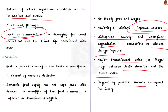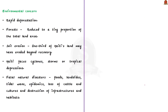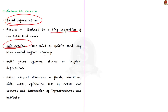Haiti has experienced a lot of political violence throughout its history. One of the main environmental concerns is rapid deforestation — forests that once covered the entire country have been reduced to a tiny portion of the total land area, causing severe soil erosion, with nearly one third of the land eroded beyond recovery. Positioned between the Caribbean Sea and the Atlantic Ocean, Haiti also experiences cyclones, storms, and tropical depressions, leading to floods, landslides, tidal waves, epidemics, loss of cattle, and destruction of infrastructure.